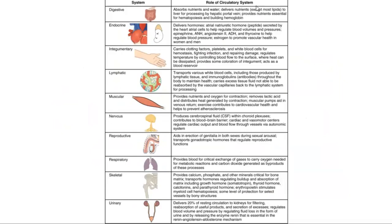The role of the circulatory system relates to many body systems: digestive, endocrine, integumentary, lymphatic, and muscular. For the digestive system, it absorbs nutrients and water, delivers nutrients — except most lipids — to the liver for processing via the hepatic portal vein, and provides nutrients essential for hematopoiesis and building hemoglobin. Vascularization is fundamental for all body systems.